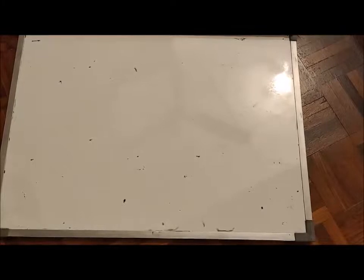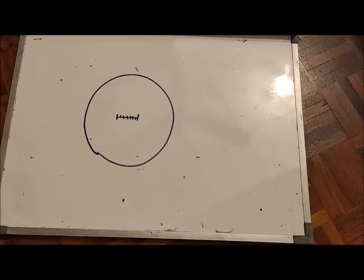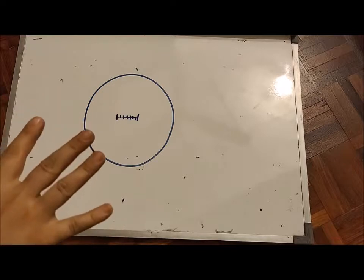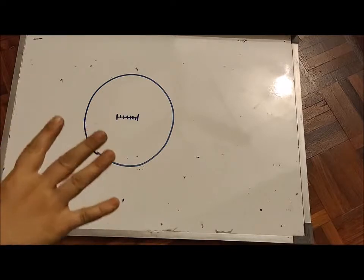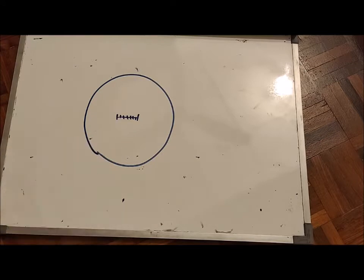Hello students, today we want to talk about the eyepiece graticule and how we use it to measure specimen lengths and diameter. It looks like this — it's a round shape, exactly round, because you need to put it inside the eyepiece and on the lens so you can measure objects with it.